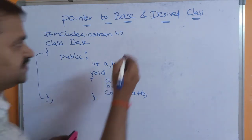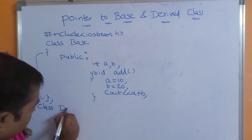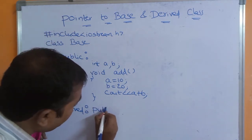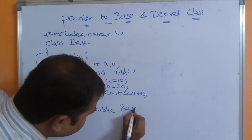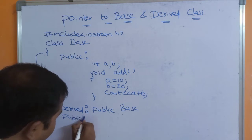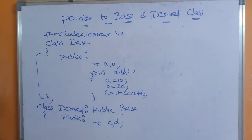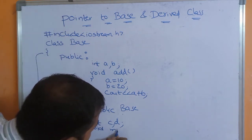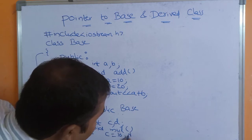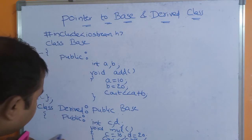Now let us have the derived class. The name of the class is 'derived'. The syntax for creating the derived class is we have to use the colon symbol, let the access specifier be public, and then the base class name is 'base'. Within the curly braces, under the public section, let us create two member variables: int c, d. And let us have a 'mul' function — mul stands for multiplication. The c value is 10, d value is 20. We display the result: cout less than less than c star d. Then we close the mul function and close the class.